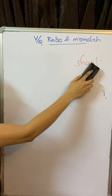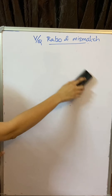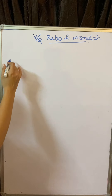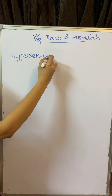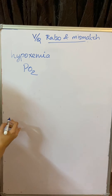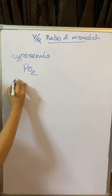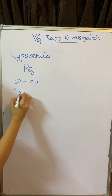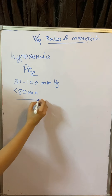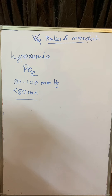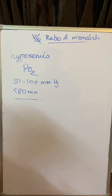There are two terms: hypoxia and hypoxemia. Hypoxemia is whenever there is reduced dissolved oxygen inside the blood. It is represented by a low PaO2. Normal PO2 is 80 to 100 mmHg. Whenever it goes below 80 mmHg, we call it hypoxemia. One of the most common causes of hypoxemia is ventilation perfusion mismatch.